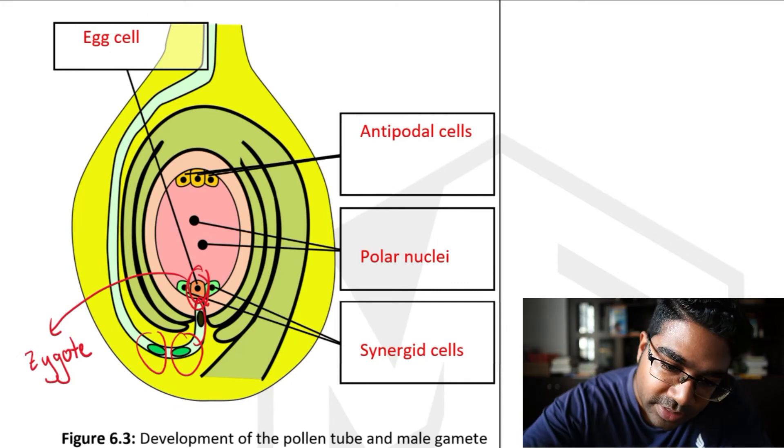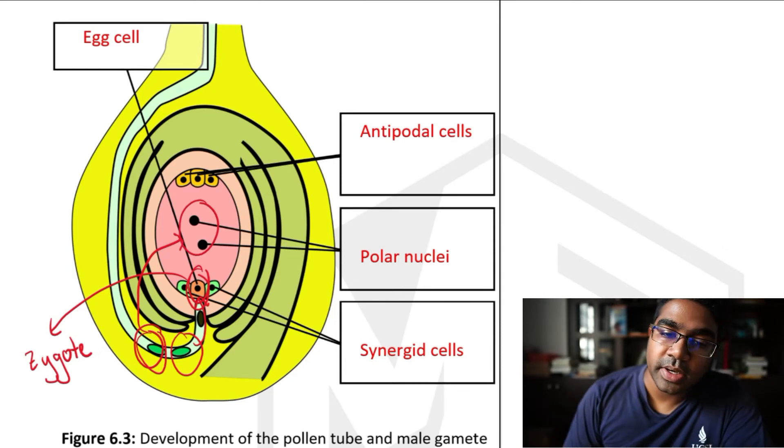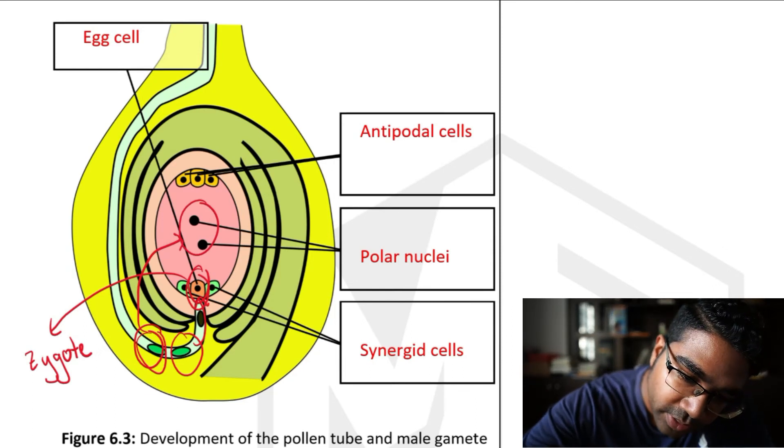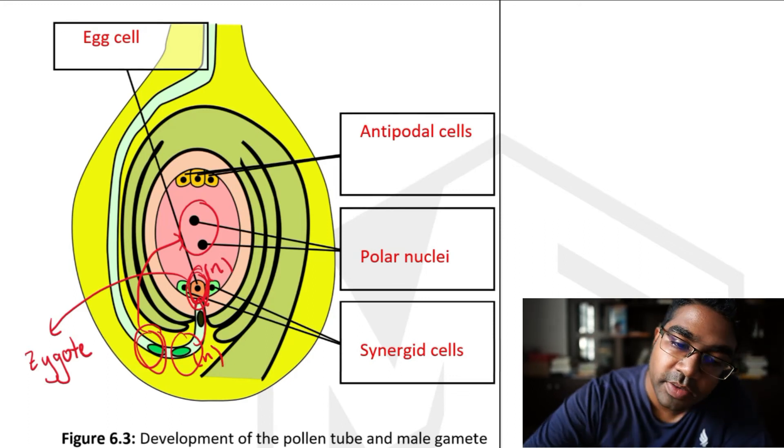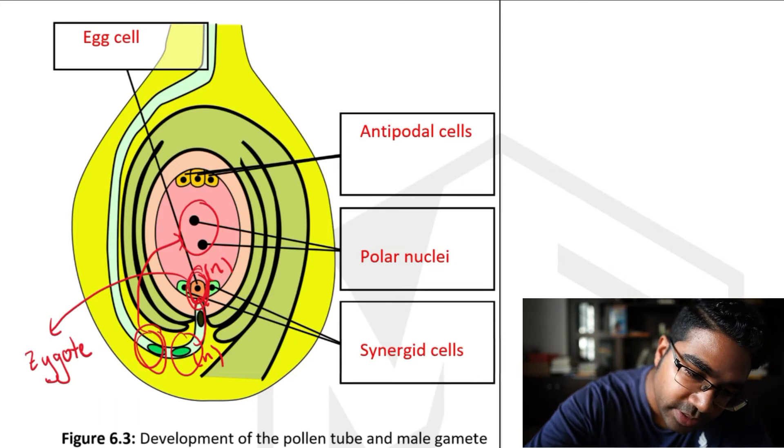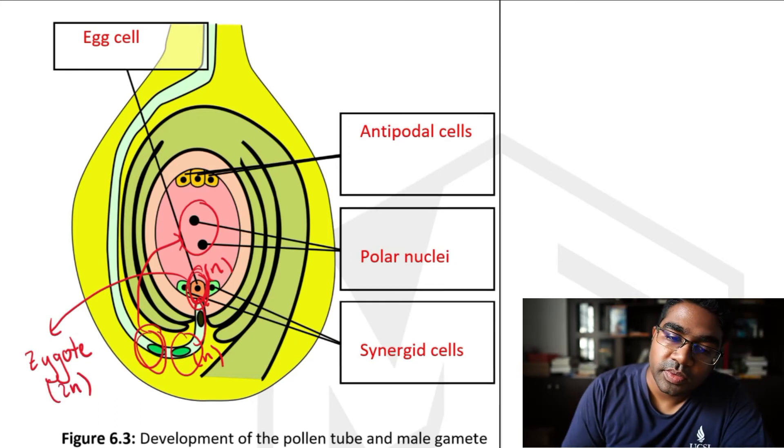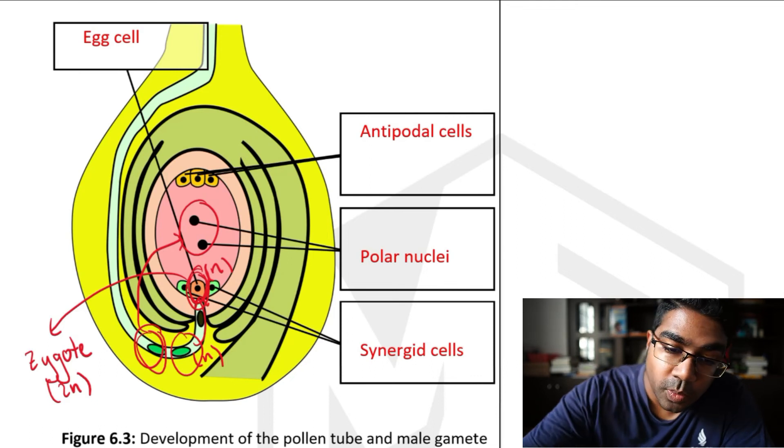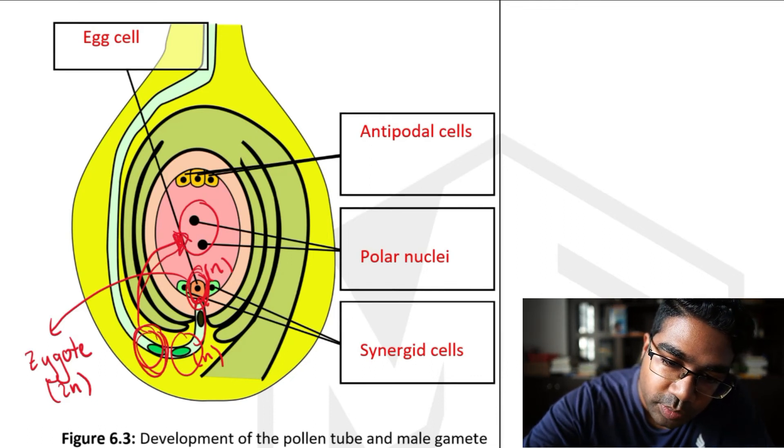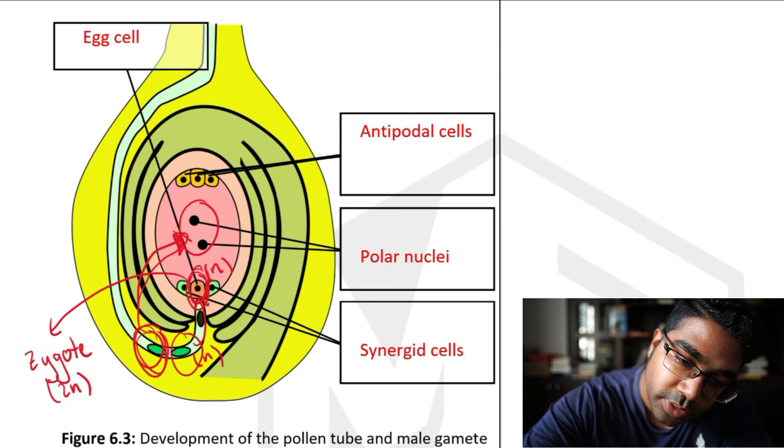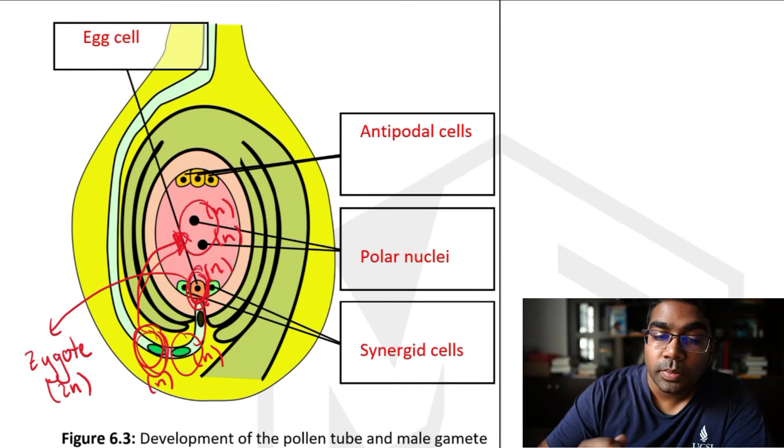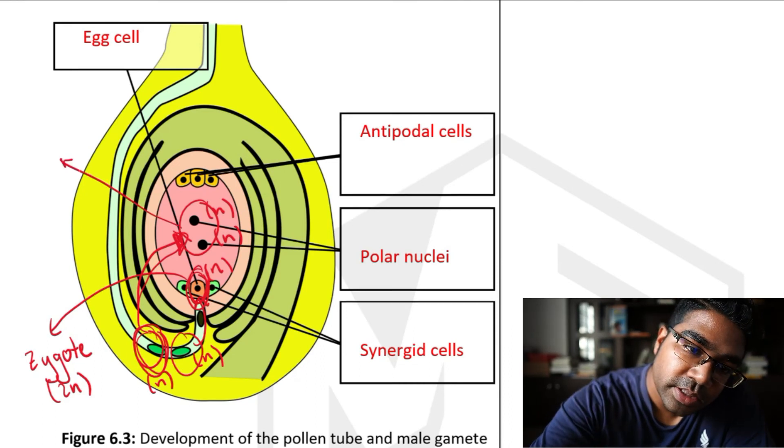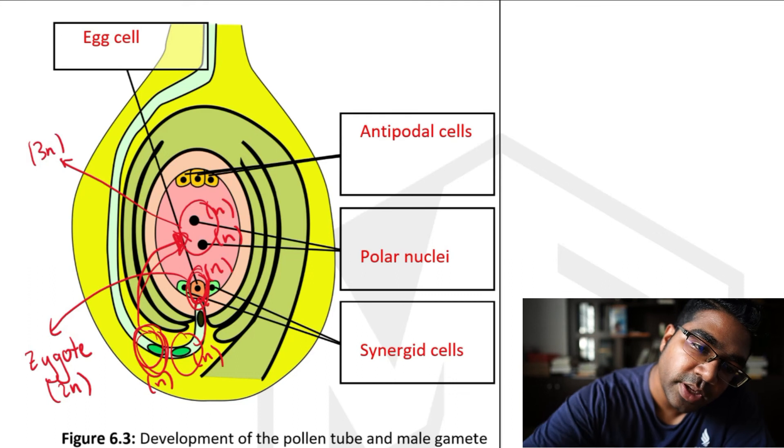And then the second male gamete will actually fertilize the two polar nuclei. So the zygote is diploid because we have n from the egg cell, n number of chromosomes and n from one of the male gametes. So this is a diploid number of chromosomes in the zygote. But when the male gamete fertilizes the two polar nuclei, each polar nuclei is n as well. And the gamete is also n. So what we end up with is a 3n cell, 3n nucleus.